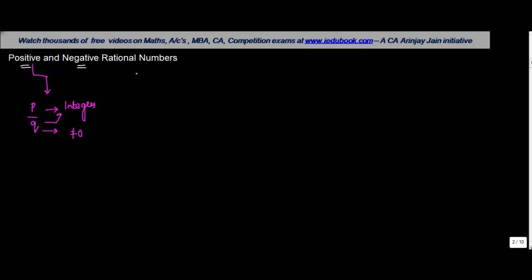Now, integers as we know contains the negative numbers, negative natural numbers, and the positive natural numbers. So both P and Q can have different set of values.